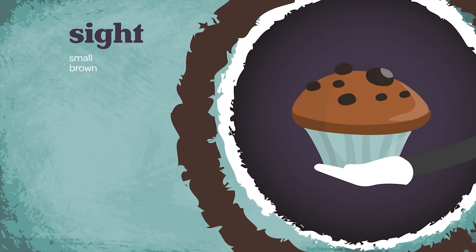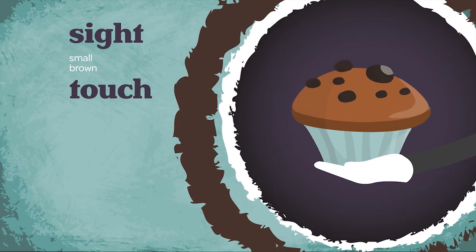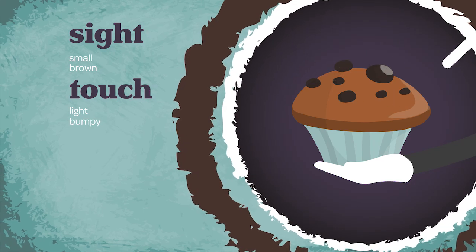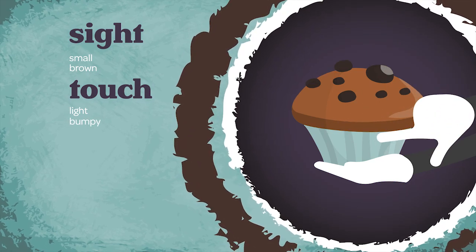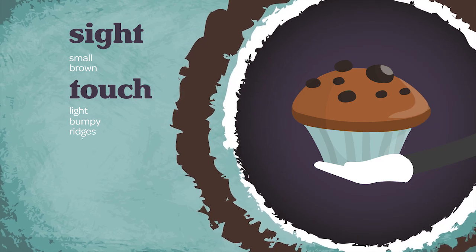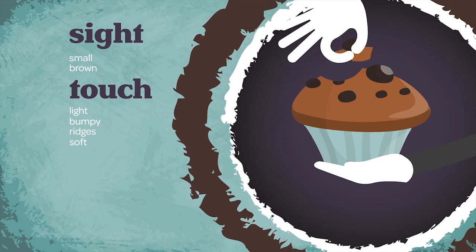Using your sense of touch, you can observe that the weight of the object is light. The texture feels a bit bumpy on top and the sides of the object have ridges. The object is also soft. You can break it easily with your fingers.